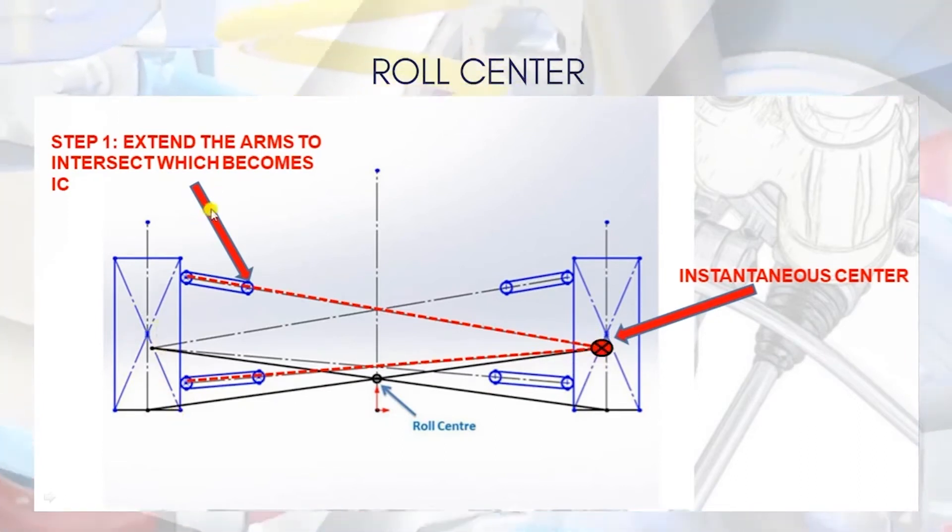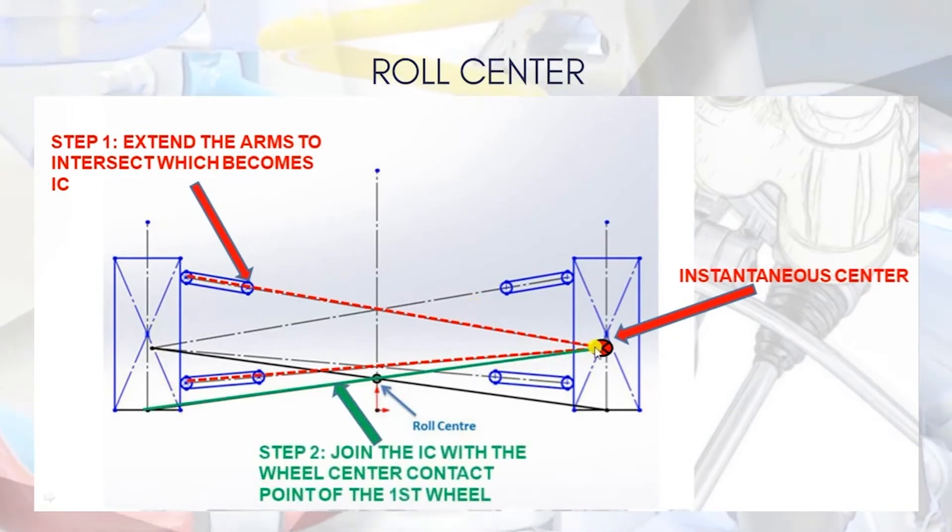Once you have found what the instantaneous center is, you then connect that instantaneous center to the wheel center point. So the wheel vertical axis center point, you connect this line, and assuming your left and right suspension, in 99.99% case scenario, they are going to be symmetric.